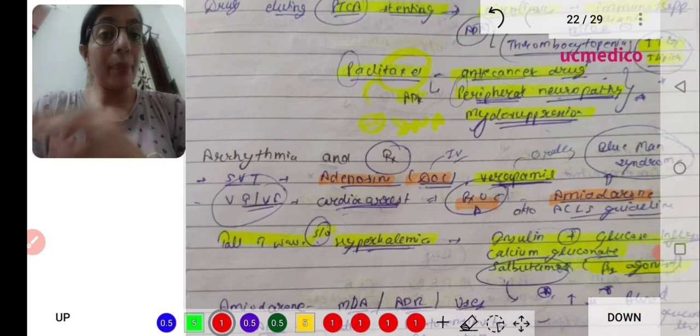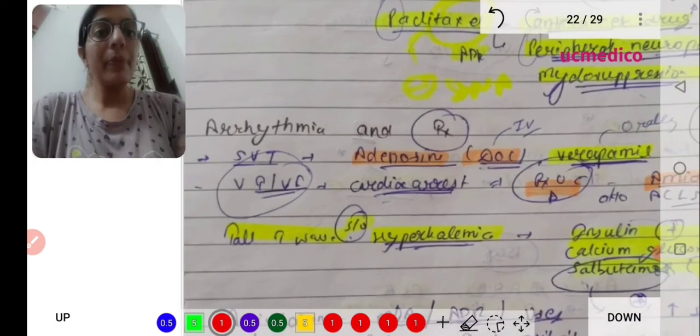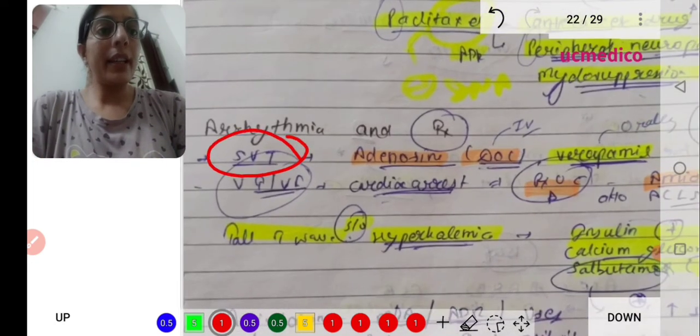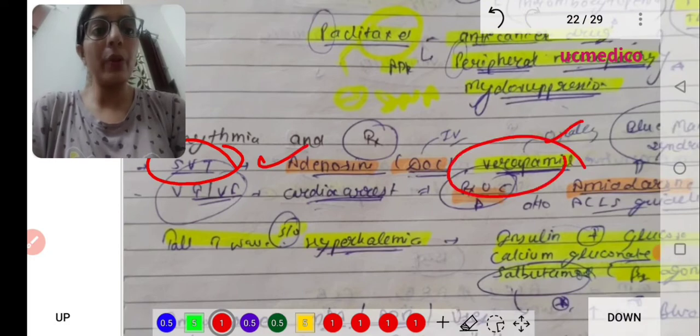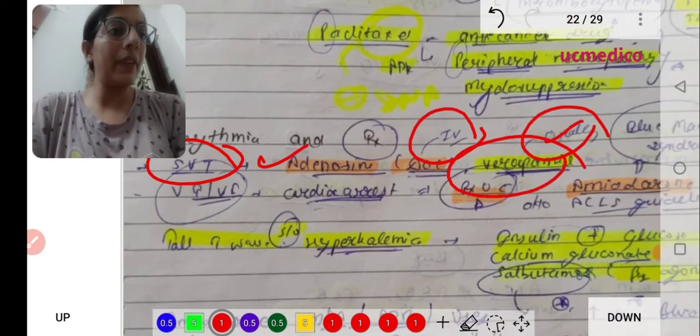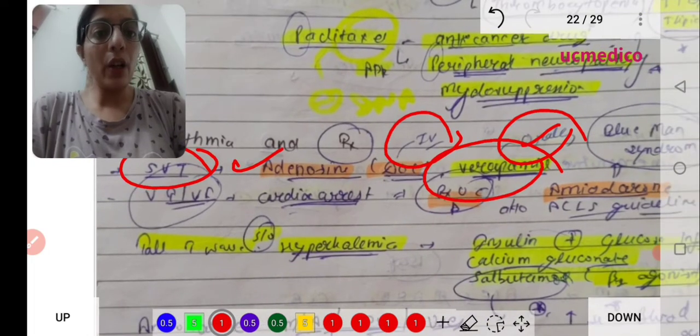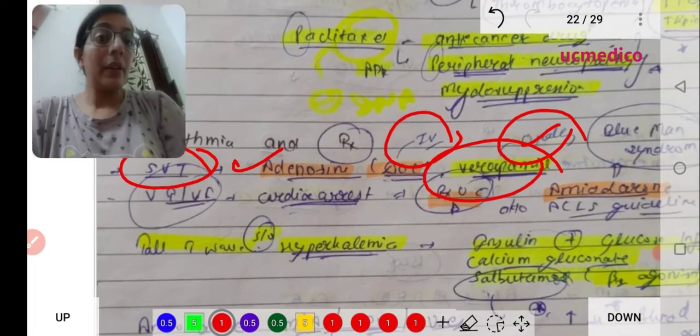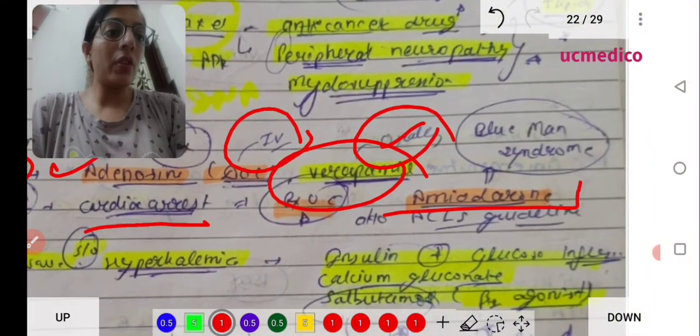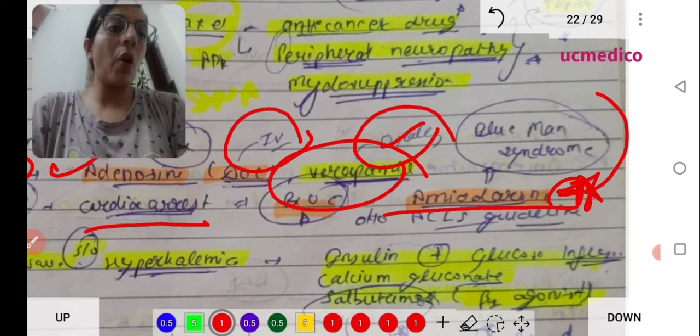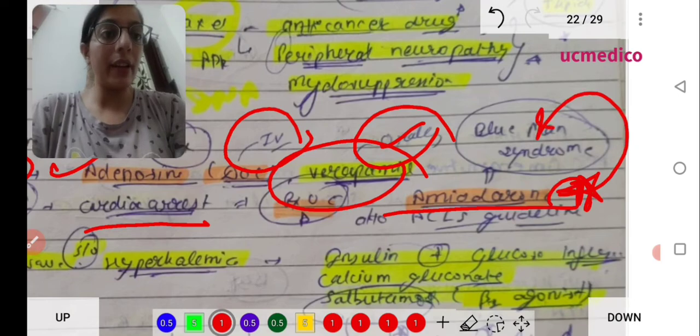Arrhythmia drugs - the classification is important. Kindly remember the drugs. For supraventricular tachycardia, drug of choice is adenosine. Other drug that can be used is verapamil. Adenosine is given IV while verapamil is given orally. For ventricular tachycardia or ventricular fibrillation which leads to cardiac arrest, the drug of choice is amiodarone.